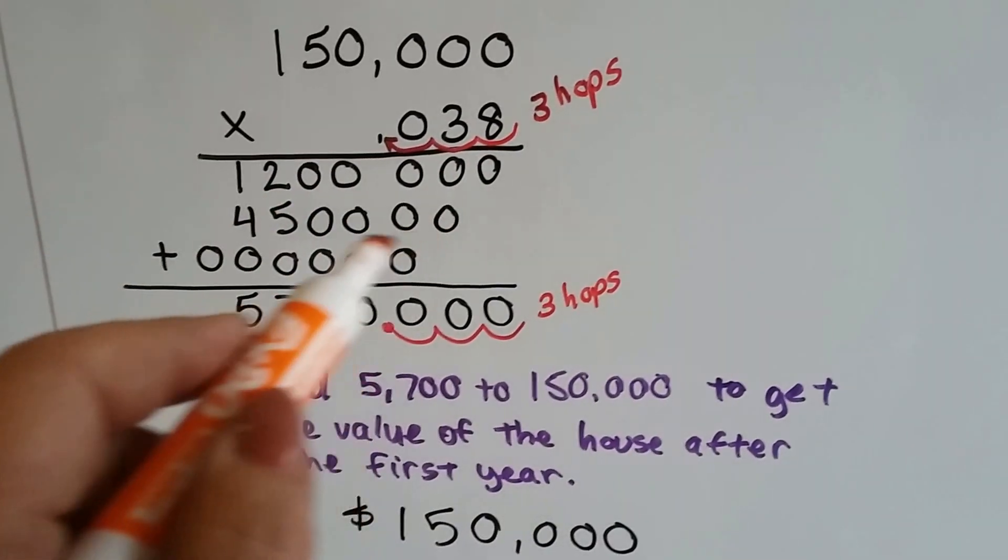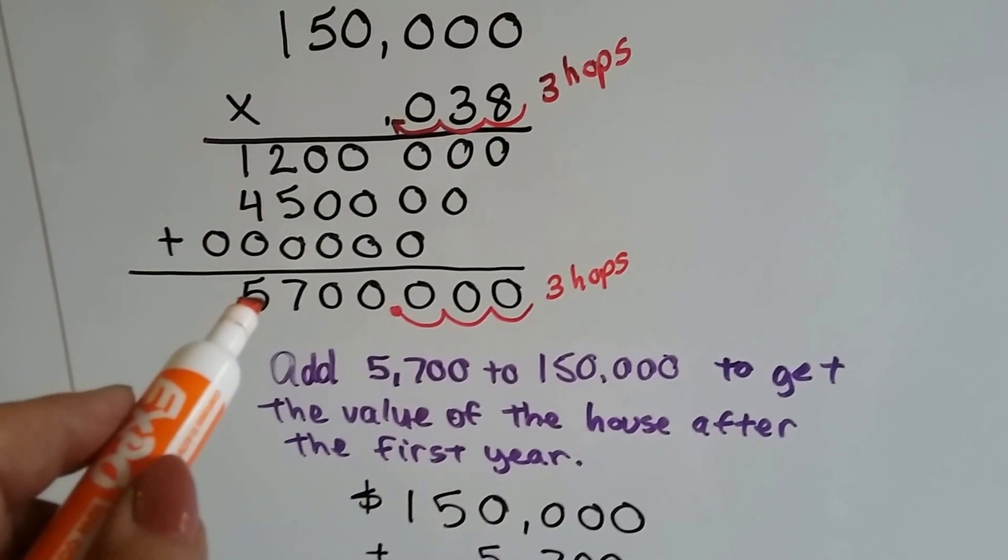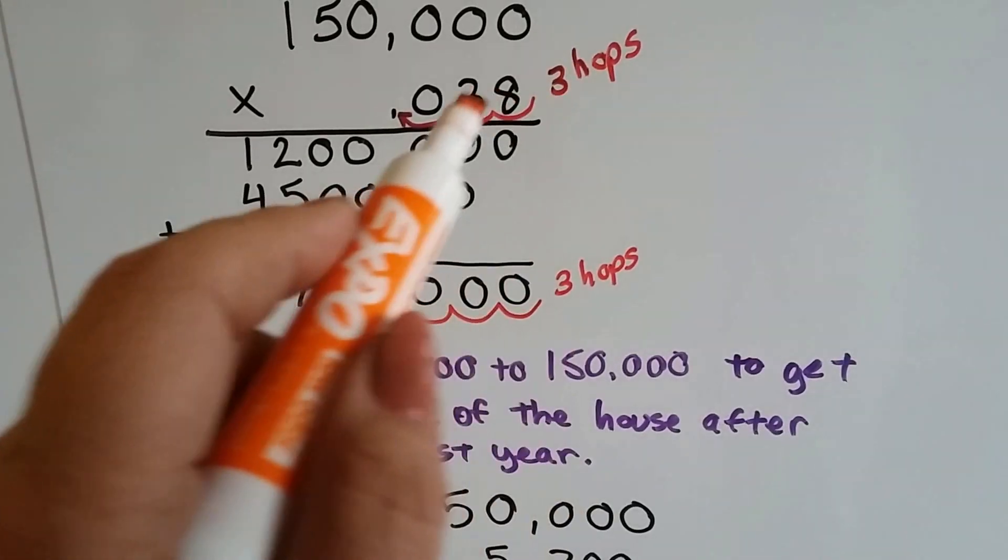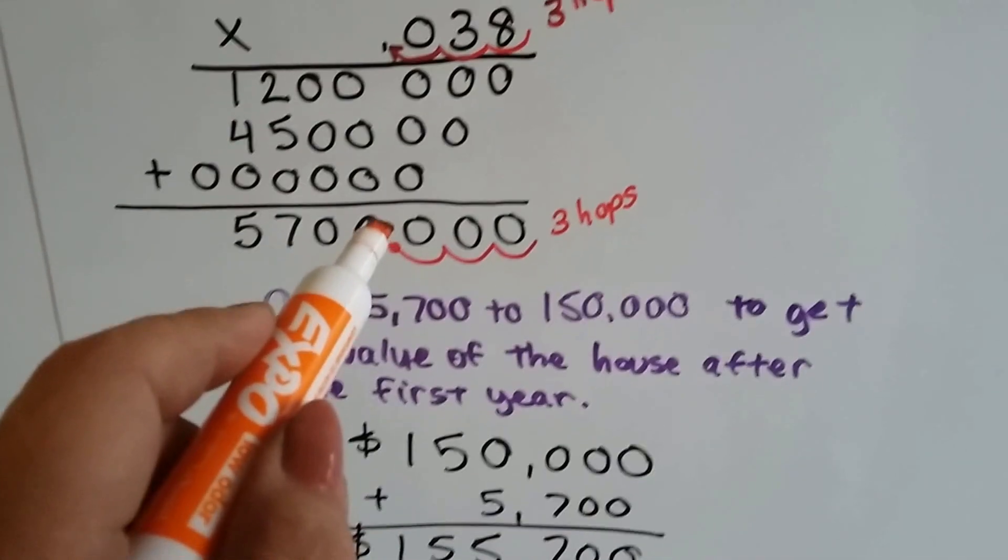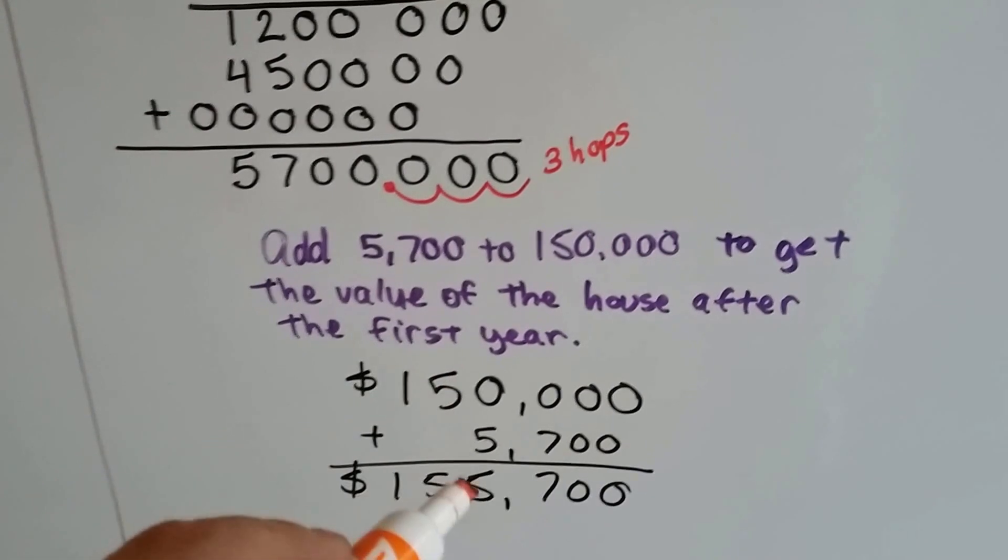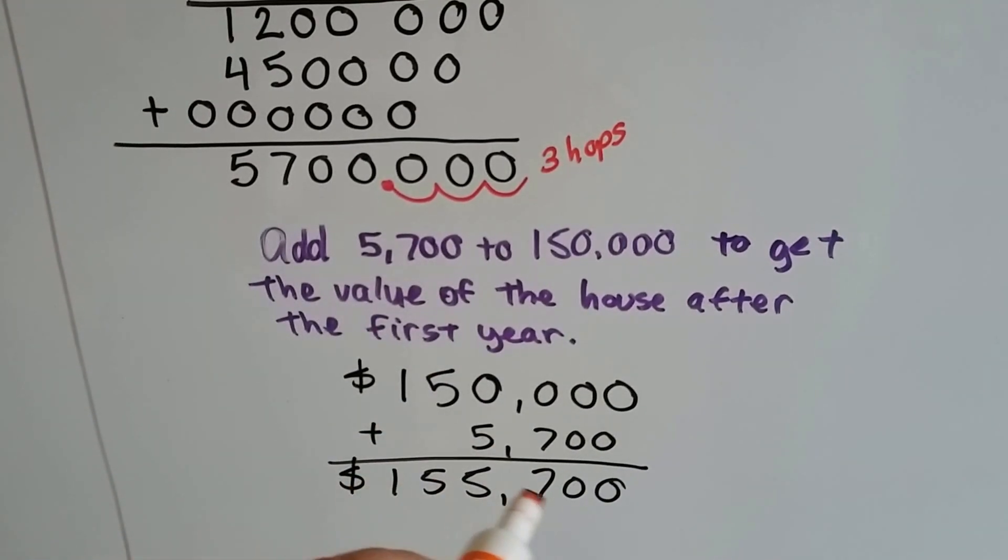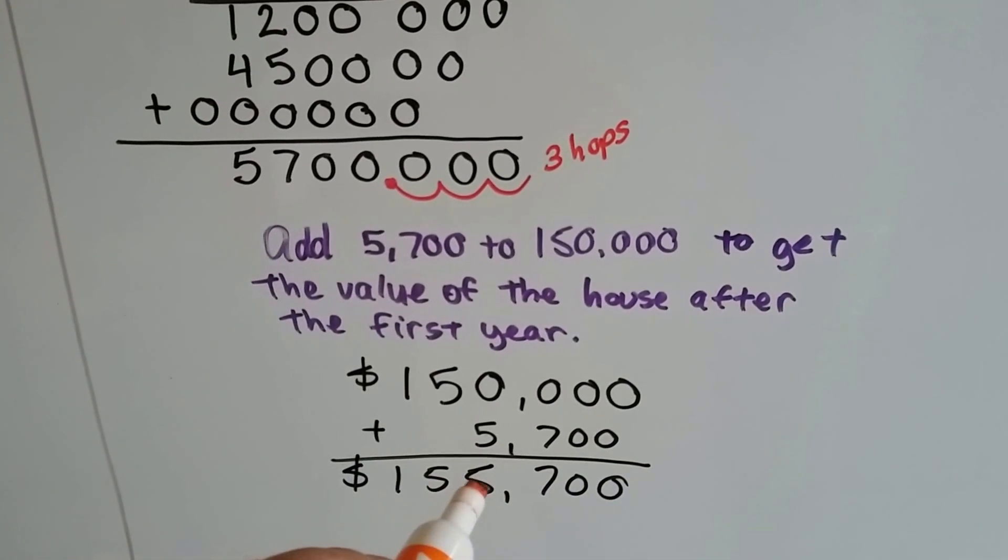So we multiplied the 150,000 by the 0.038. And after multiplying each place value, came up with 5,700. There were three hops in the equation, so we put three hops for the decimal in the product. We add this to the original value, and her new value after the first year is $155,700.